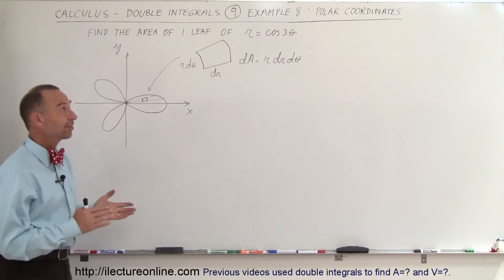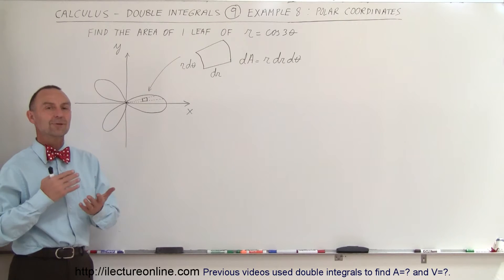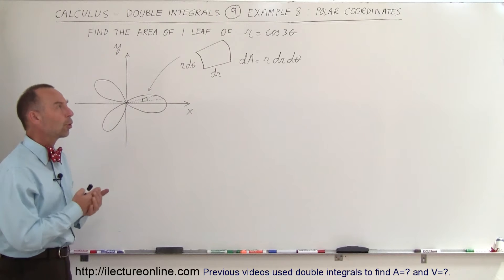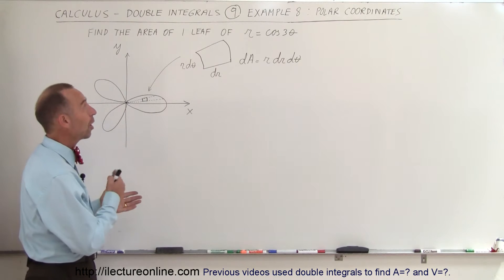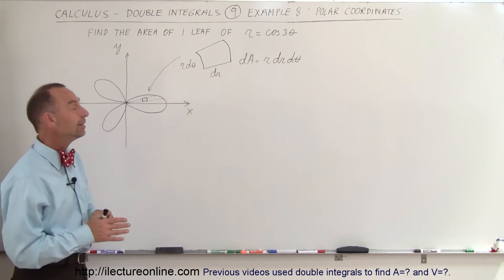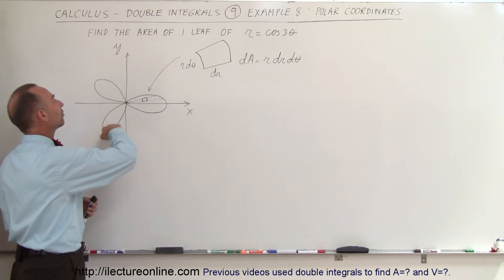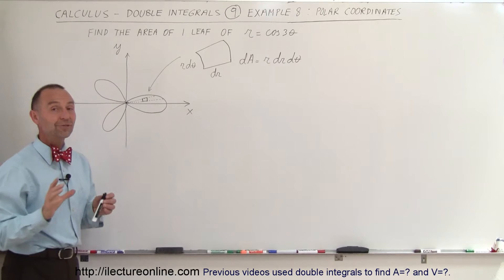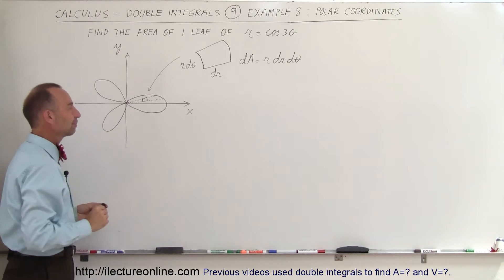Welcome to our lecture online. Our next example is going to use the double integral technique on polar coordinates. We have a function R equals cosine of 3 theta, and if you remember how to draw that, it looks like a three-leaf clover. What we're trying to find here is the area of one of the three leaves.